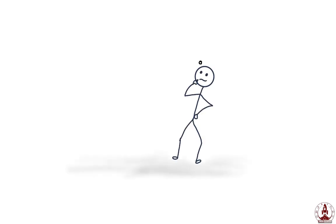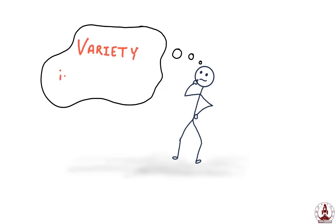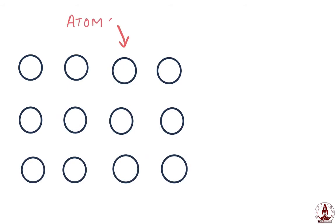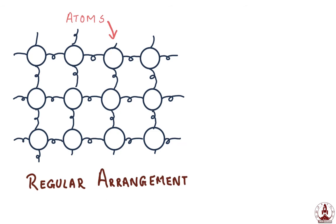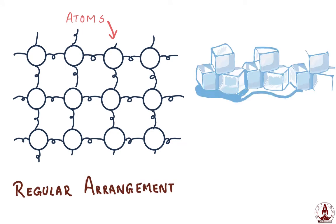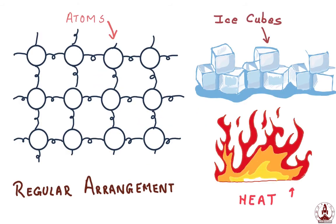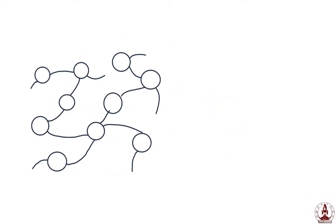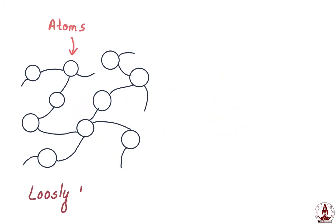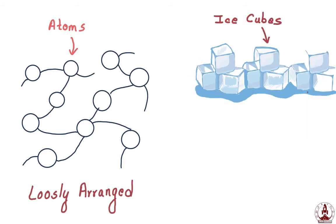That means you and me — we are all made of atoms. But if we are all made of atoms, then why do we have so much variety in nature? The answer lies in the way atoms arrange themselves. If they are regularly arranged, they give the solid state of matter — for example, ice cubes.